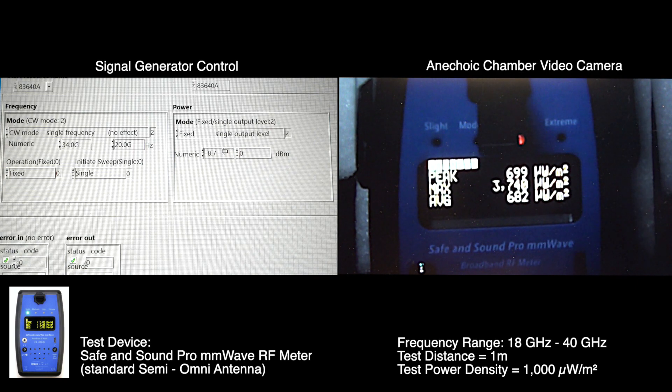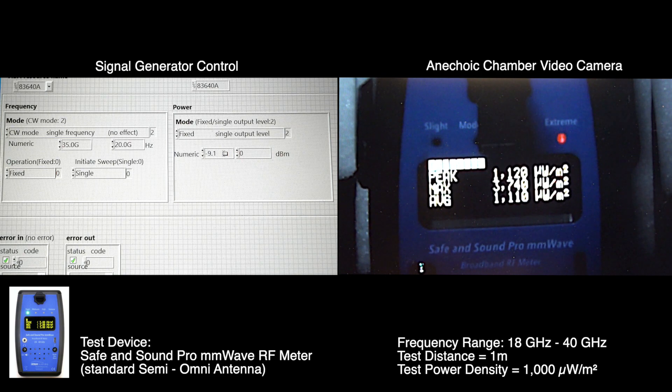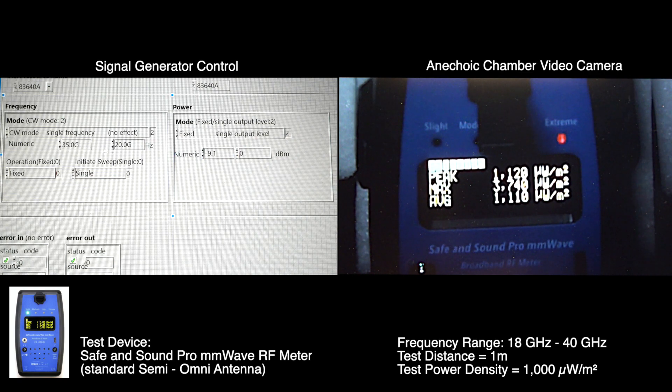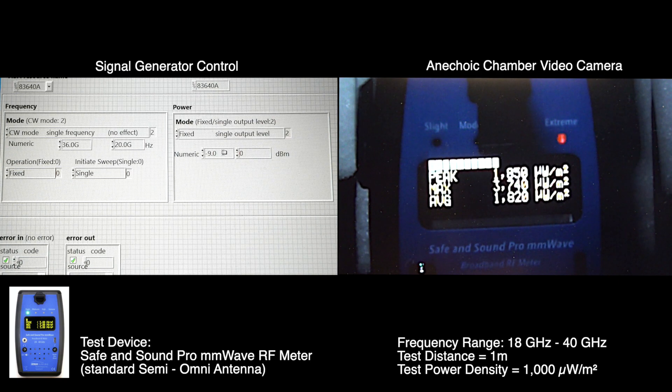35 gigahertz, minus 9.1. In the perfect world we're expecting 1000 but we got 1110. 36 gigahertz, minus 9.0. More sensitive here, 1820 microwatts per square meter.